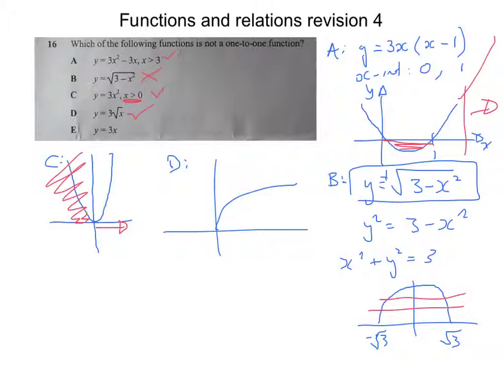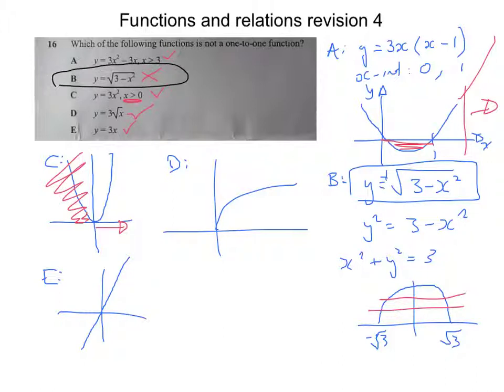For graph E, y equals 3x: it's a linear graph with a gradient of 3, so it's definitely one-to-one — every x value has only one y value and every y value has only one corresponding x value. So the answer to this question is B, which is not a one-to-one function.